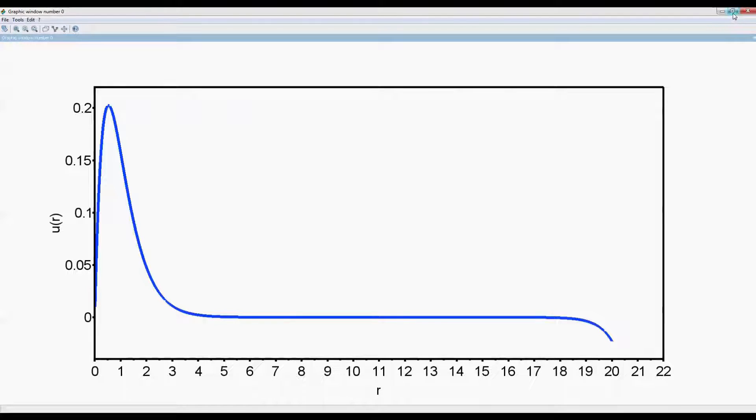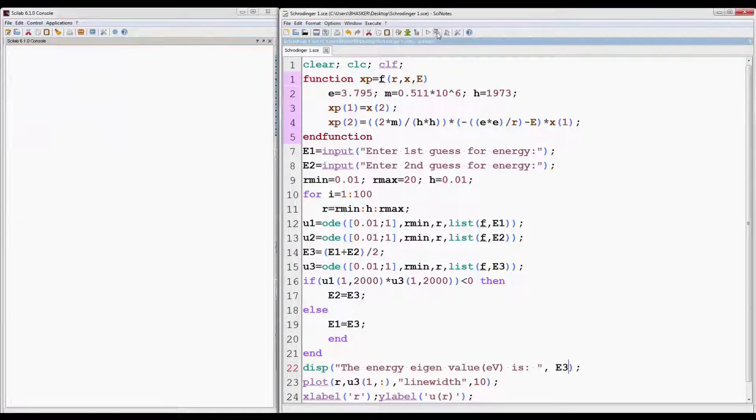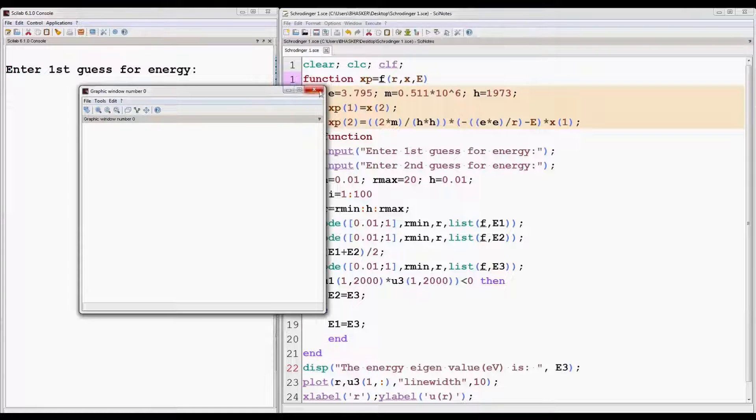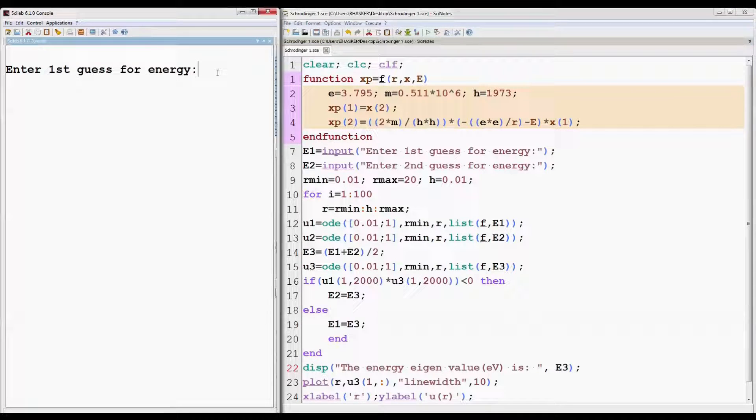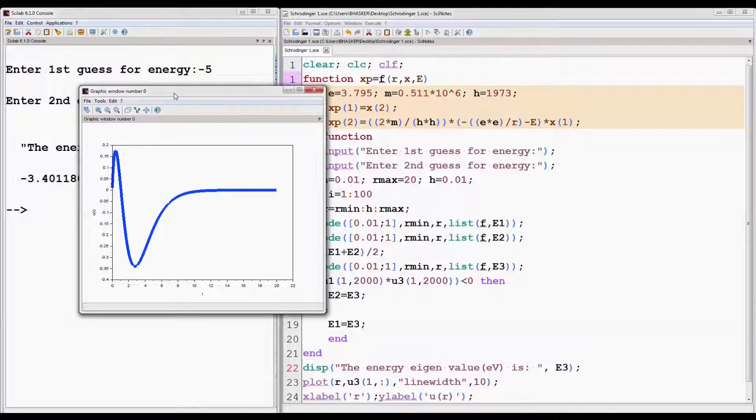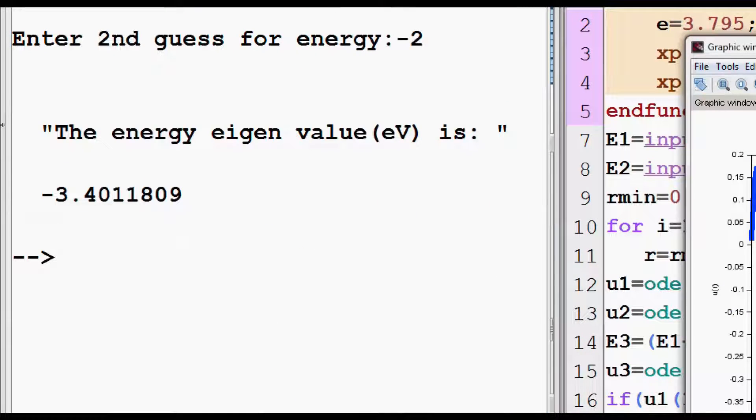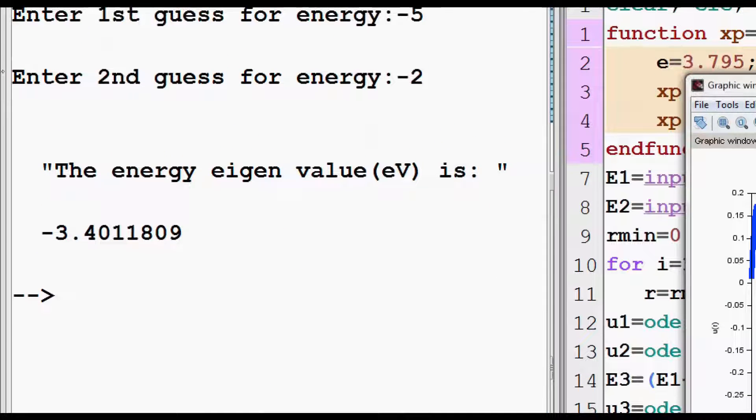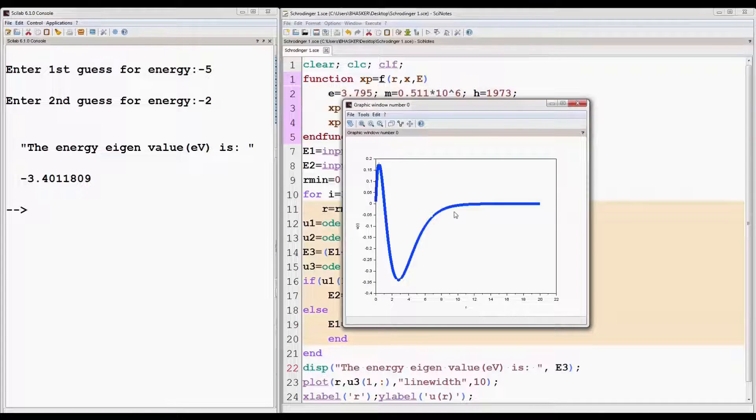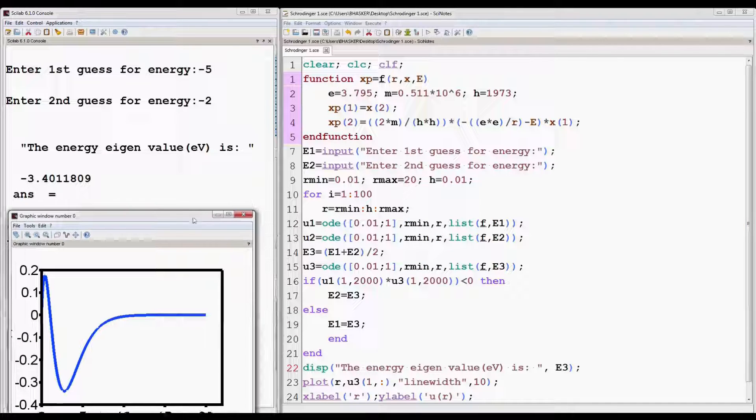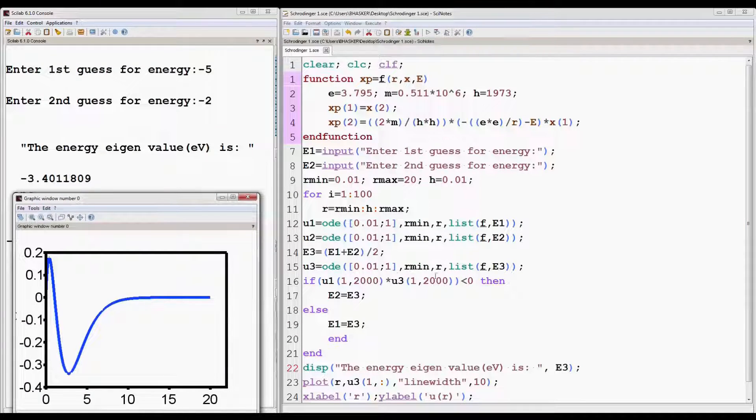Run the program again. This time we'll give the range for the first excited state. So E1 minus 5 and E2 as minus 2. Press enter. So minus 3.40118009 is the energy of the first excited state. We can change the font size of the labels and numbers for the curve as we did earlier.